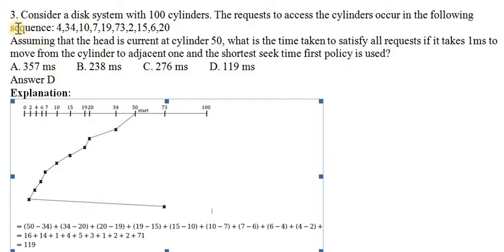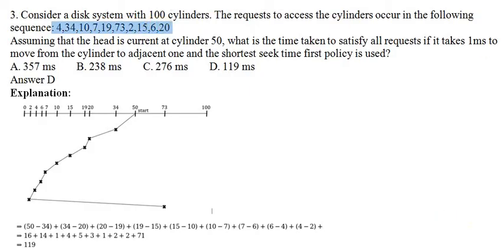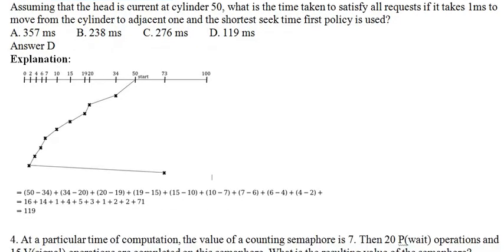The total number of moves to satisfy all cylinder requests is 119 moves. They are also asking what is the time taken to complete all those moves. Totally 119 moves, and each move takes one millisecond, so we multiply 119 by one millisecond, which gives 119 milliseconds. That is the answer.